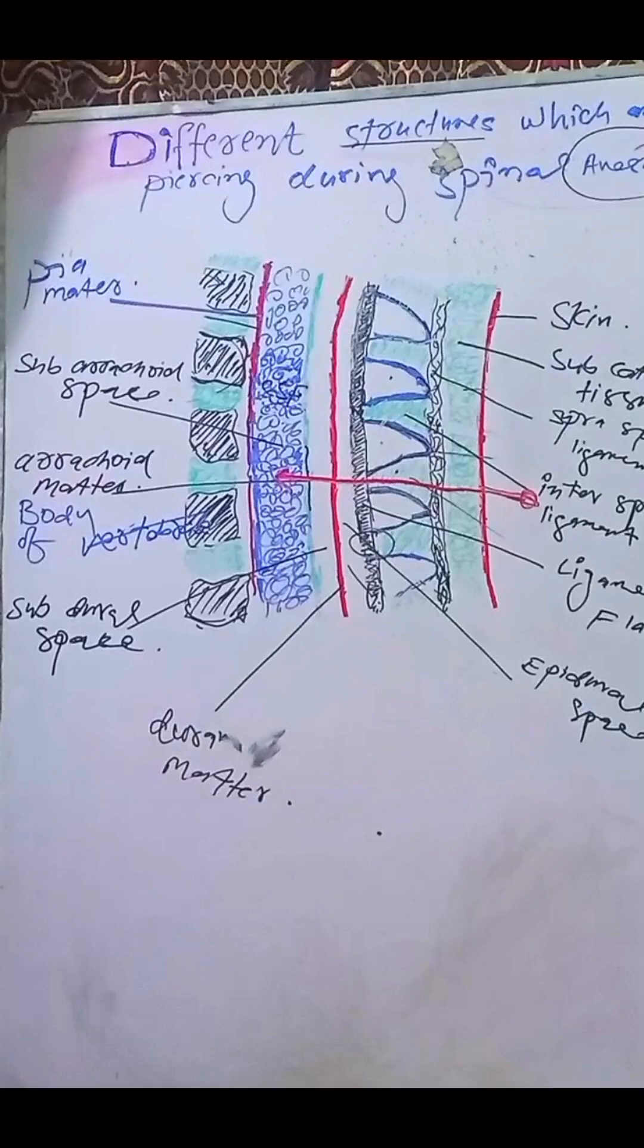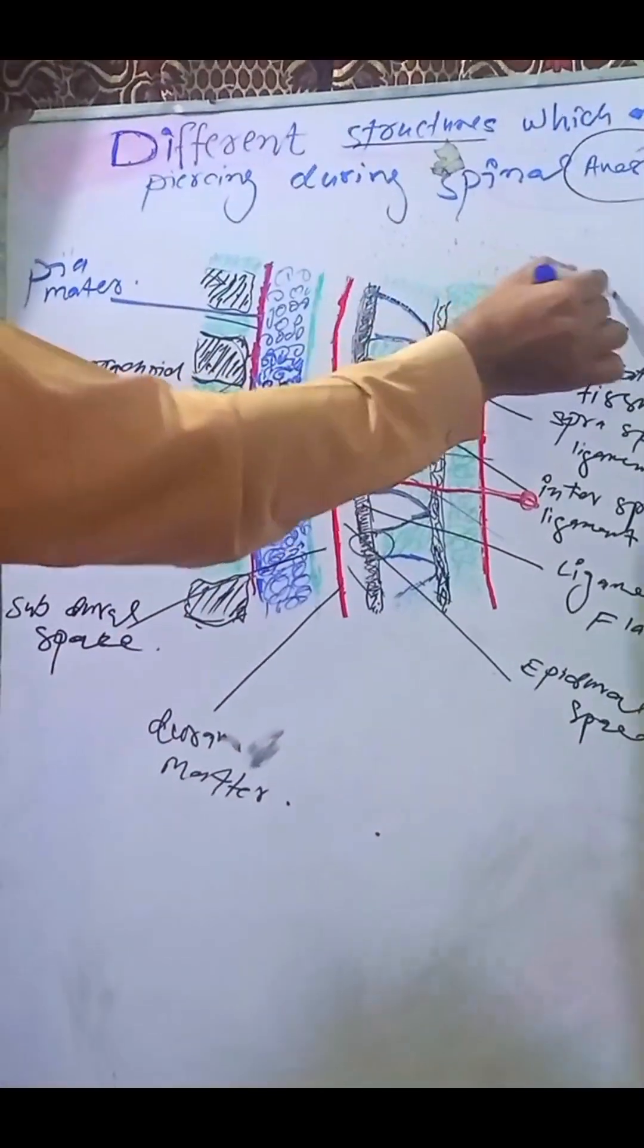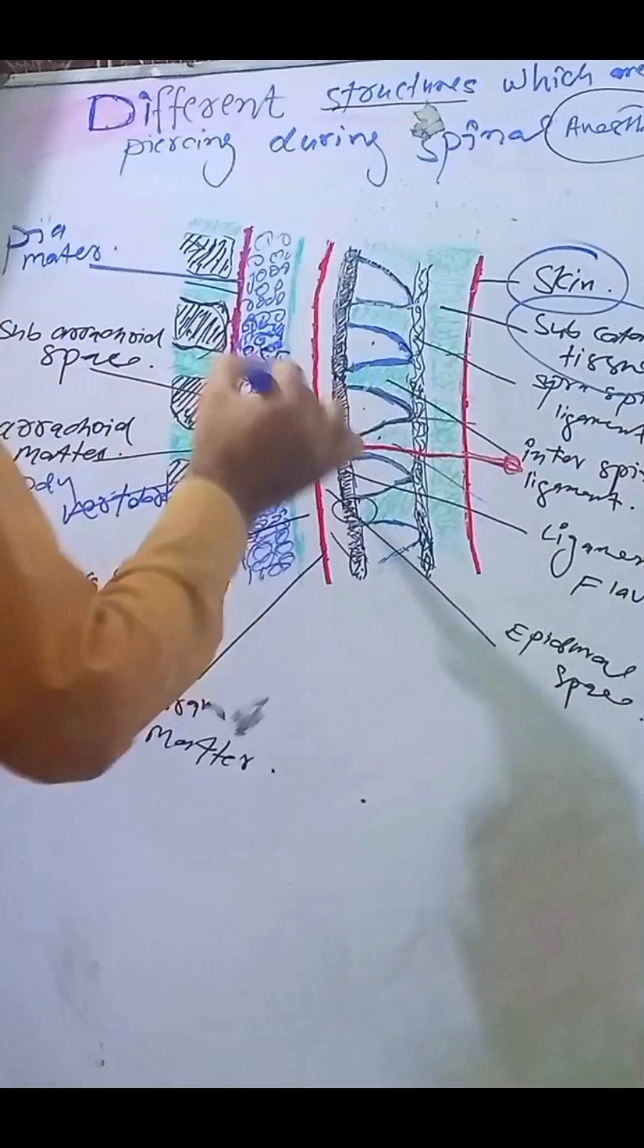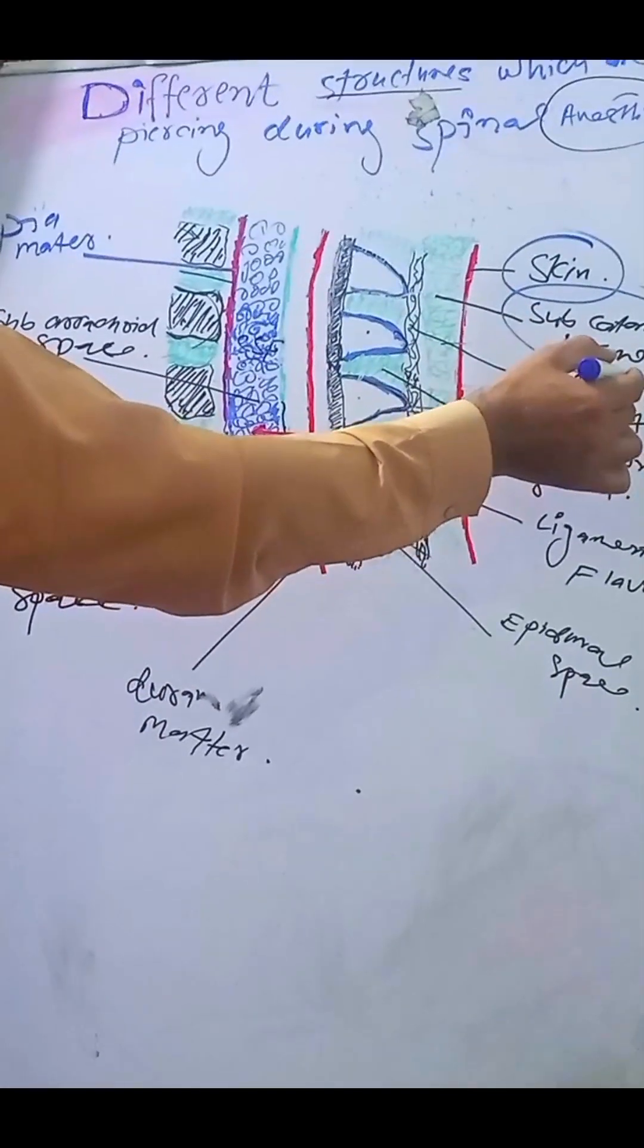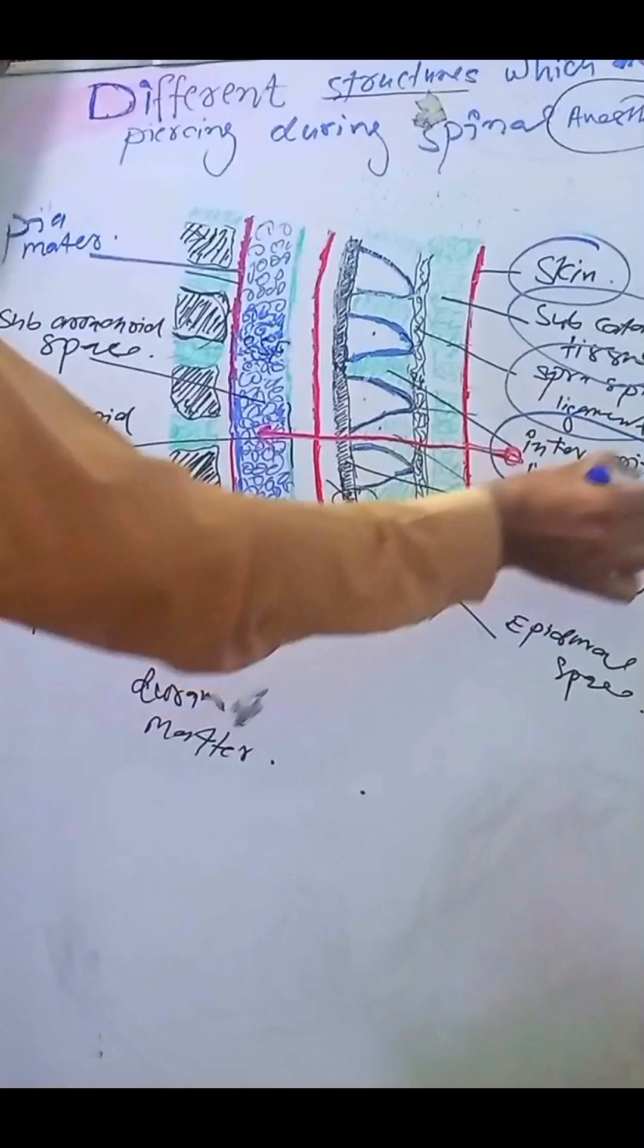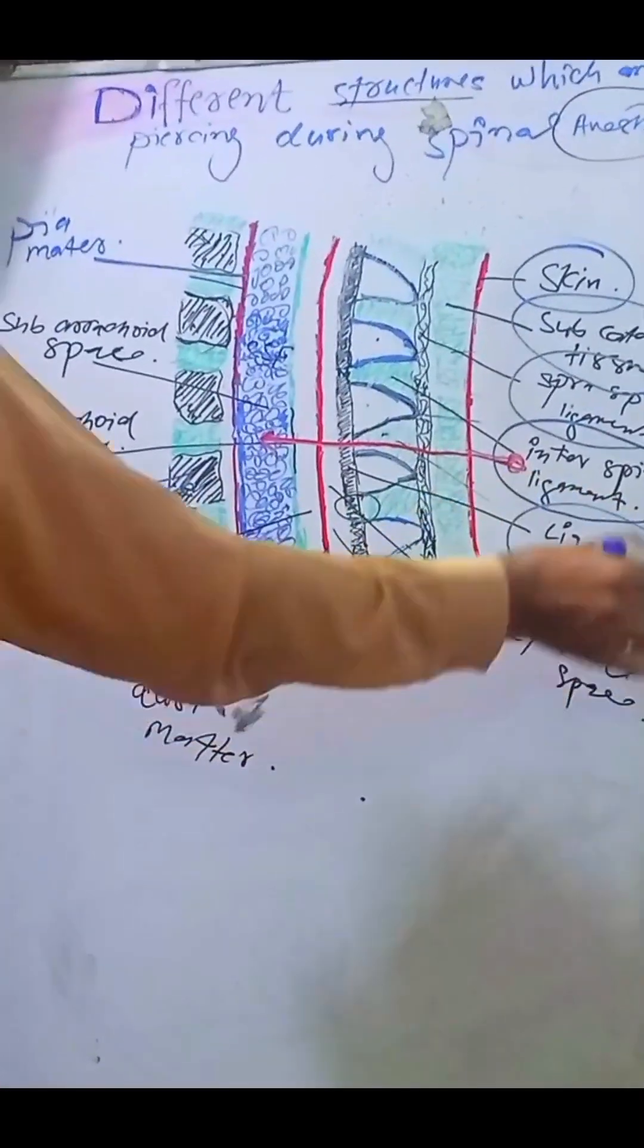Now the quick review. The layers to pierce: skin, the second one is subcutaneous tissues, third is the supraspinous ligament, the fourth one is interspinous ligament, the next one is ligamentum flavum.